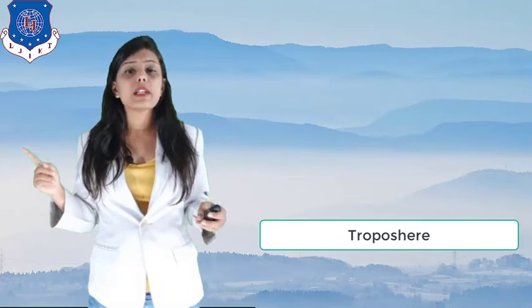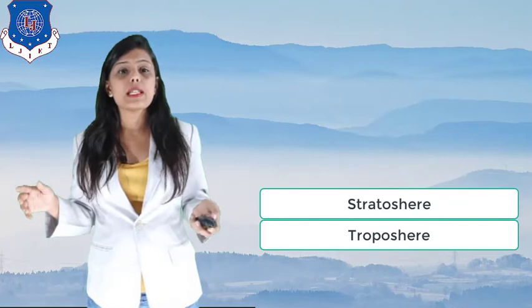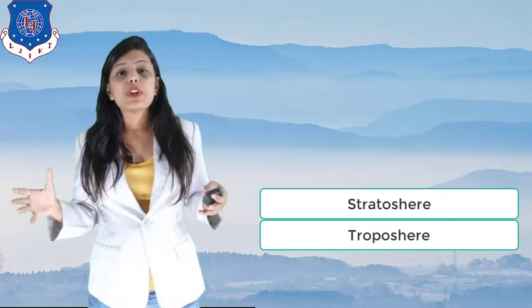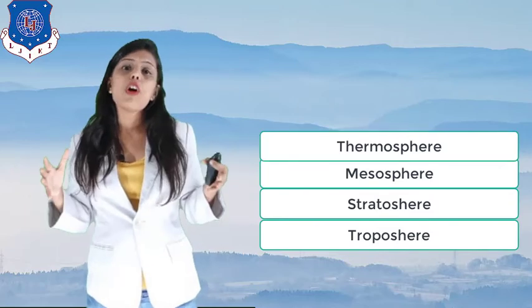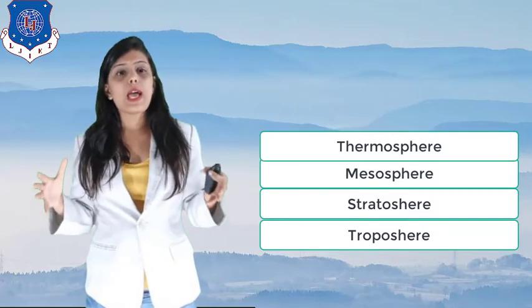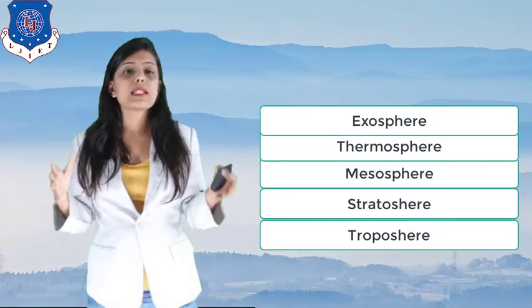The earth's atmosphere is divided into five layers: troposphere, stratosphere, mesosphere, thermosphere, and exosphere.